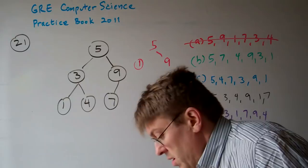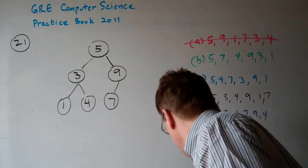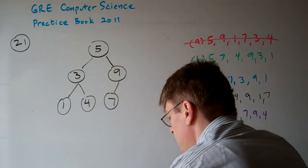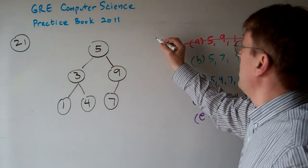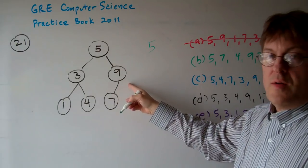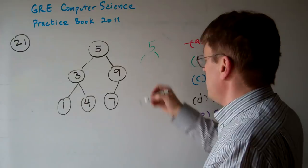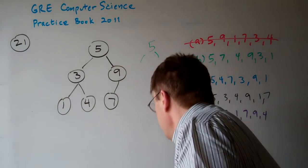Let's try B. We do 5, 7. No, that's not going to work. 7's down here. We can't have 7 branching off here. So that's not going to work.